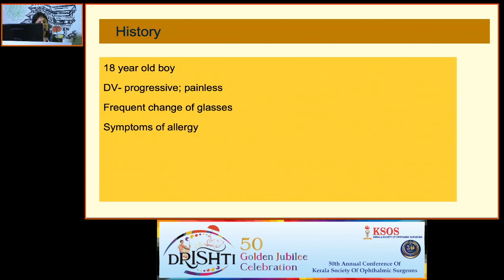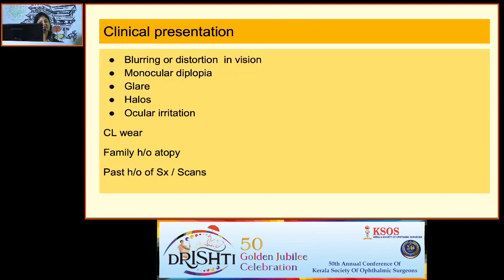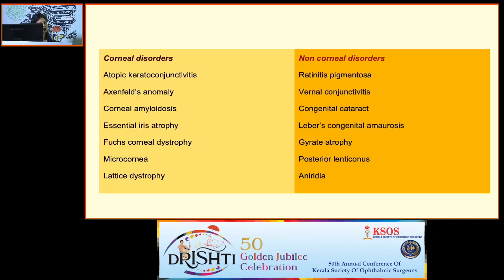Next case: an 18-year-old boy with progressive painless defective vision, frequent change of glasses, and symptoms of allergy — most probable diagnosis is keratoconus. Patients typically present with blurring of vision, monocular diplopia, glare, and halos. Ask about contact lens wear, family history of atopy, and past history of surgeries or previous scans. Specific signs include steepening of the cornea, thinning, scarring, and pathognomonic features: Fleischer ring, Vogt's striae, increased visibility of corneal nerves, and ruptures in Descemet's membrane. Look for associated corneal and non-corneal disorders.